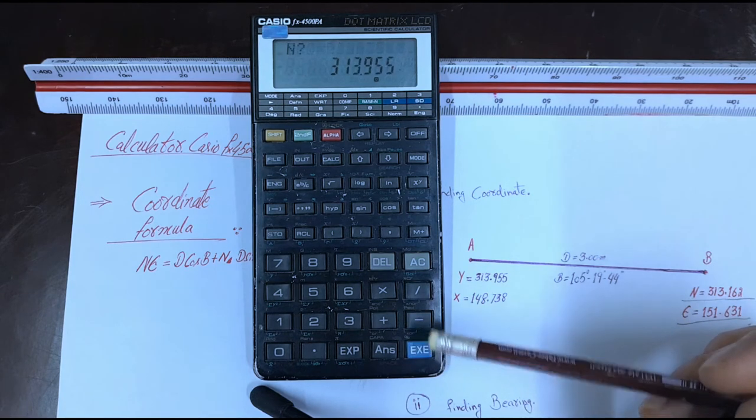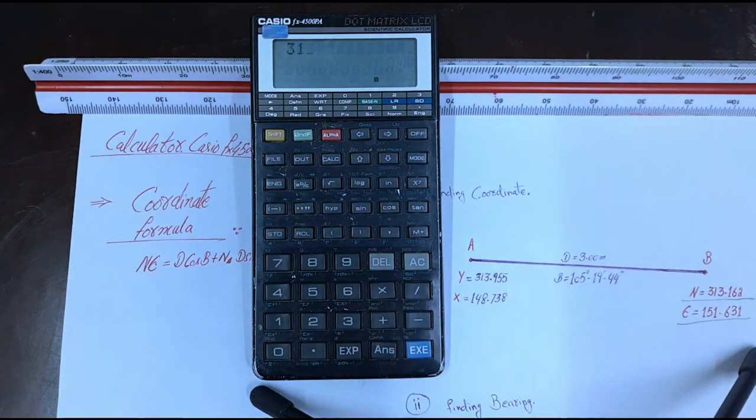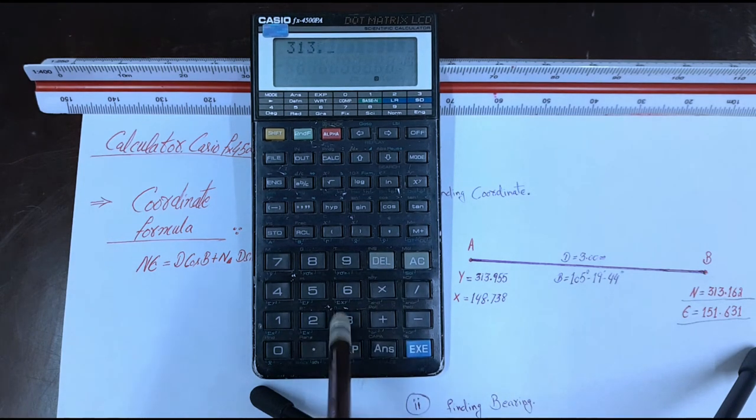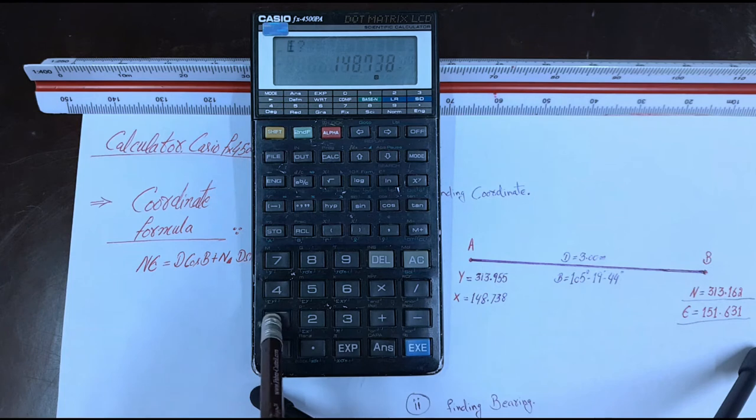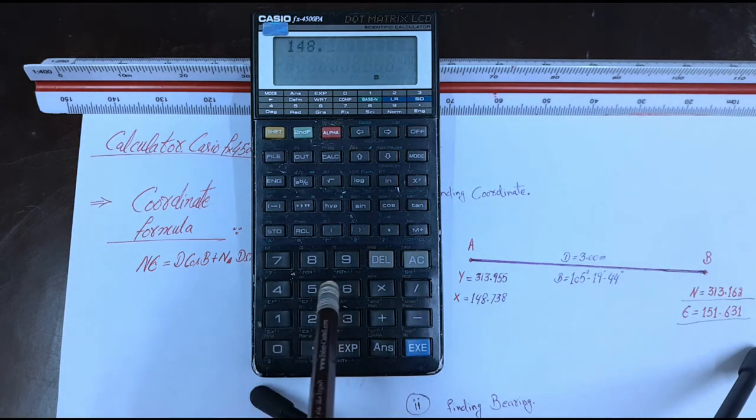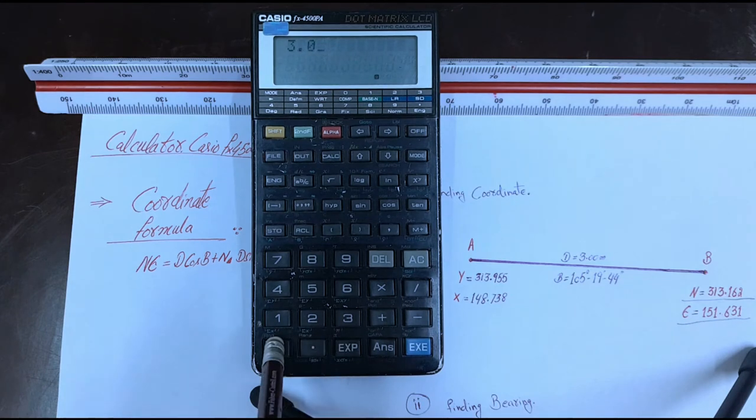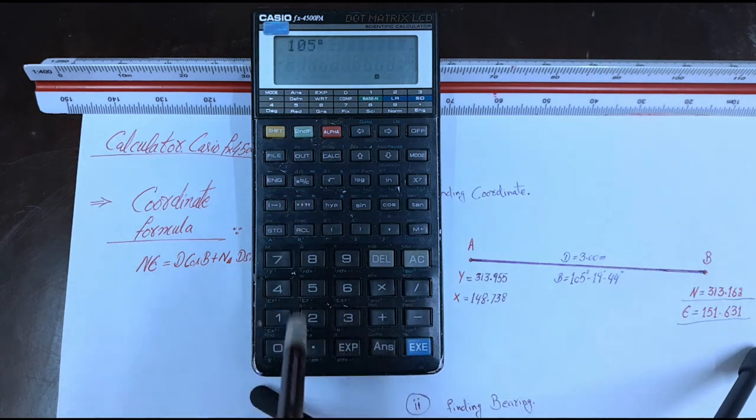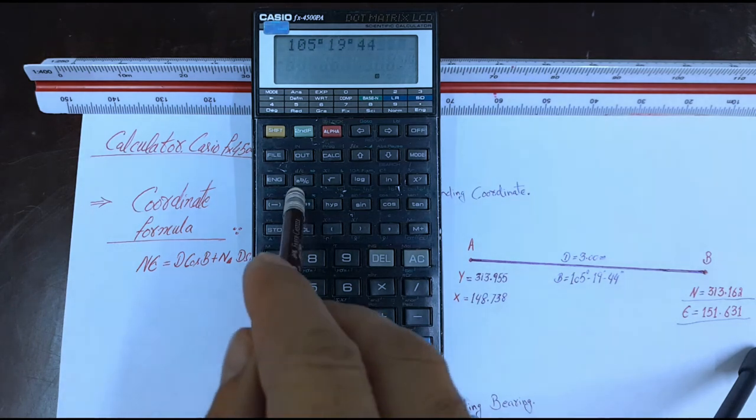EXE. You need northing point A: 313.9.955, EXE. Easting: 148.738. Distance: 3 meters. Bearing: 105 degrees 19 minutes 44 seconds.